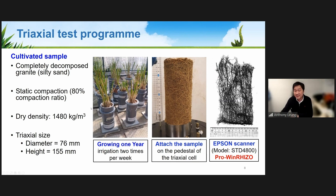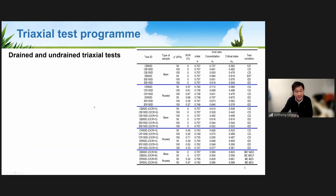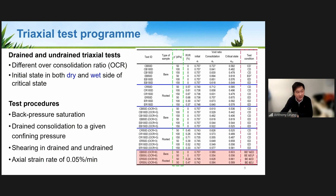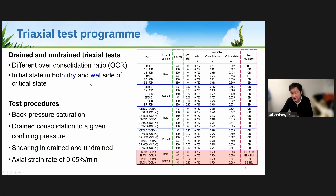We performed standard triaxial tests — both drained and undrained shearing under different confining pressures — to obtain friction angle and cohesion. Samples were compacted to different initial densities, following classic triaxial test procedures: back pressure saturation, then drained consolidation to a given confining pressure, then shearing at a slow rate to achieve drained conditions. We tested under different stress paths and drainage conditions.